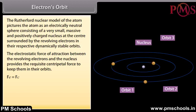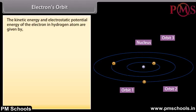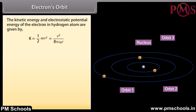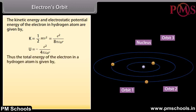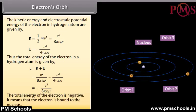The electrostatic force of attraction between the revolving electrons and the nucleus provides the requisite centripetal force to keep them in their orbits: Fe = Fc. This gives mv²/r = e²/(4πε₀r²), so R = e²/(4πε₀mv²). The kinetic energy K = ½mv² = e²/(8πε₀r), and potential energy U = −e²/(4πε₀r). Thus the total energy E = K + U = −e²/(8πε₀r). The total energy is negative, meaning the electron is bound to the nucleus.